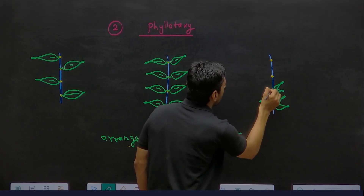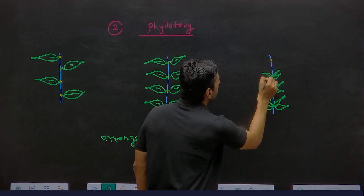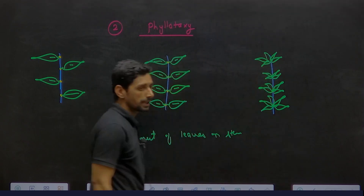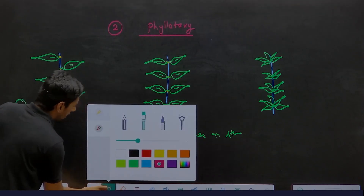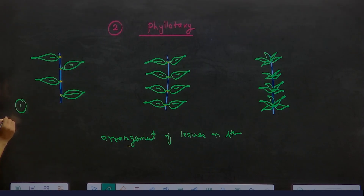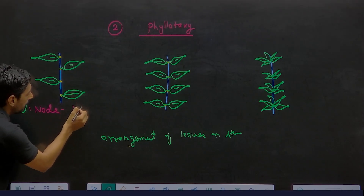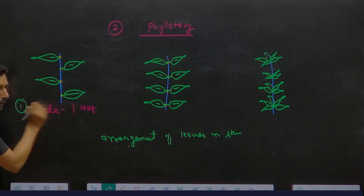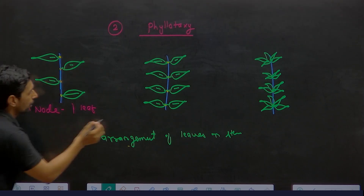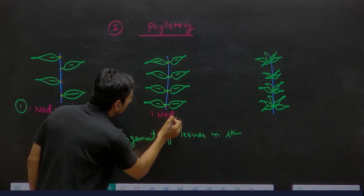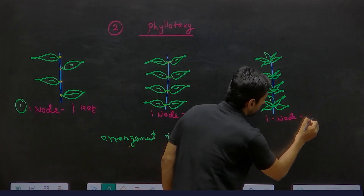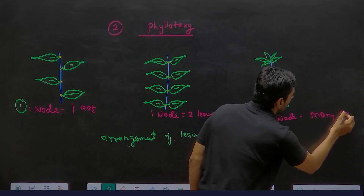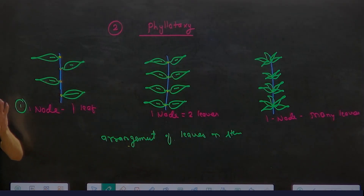Can you see something? All these are leaves. Now listen carefully. I am talking regarding the first picture. What is this yellow color dot? Node. One node — how many nodes? One node. On one node, how many leaves? One leaf. One node, one leaf. Here one node — two leaves. Here one node — many leaves. You can say multiple; it could be five somewhere, four somewhere, or six. So many leaves — is that clear?